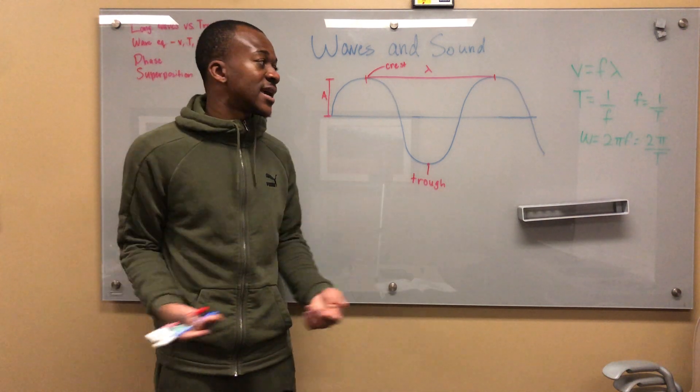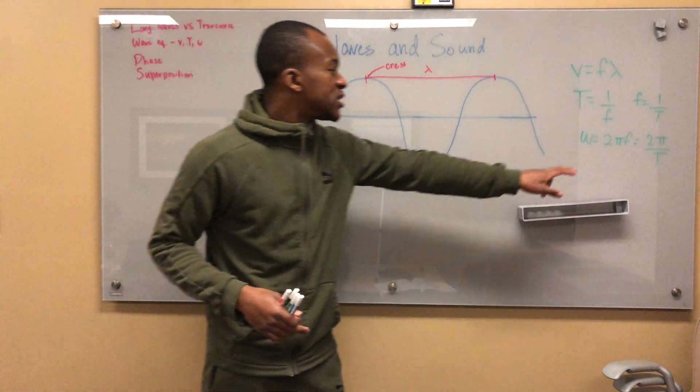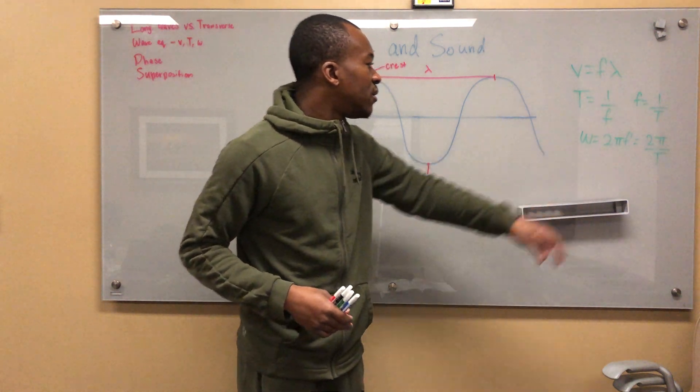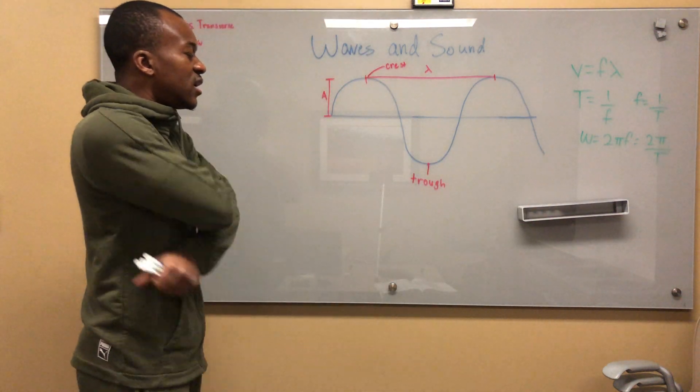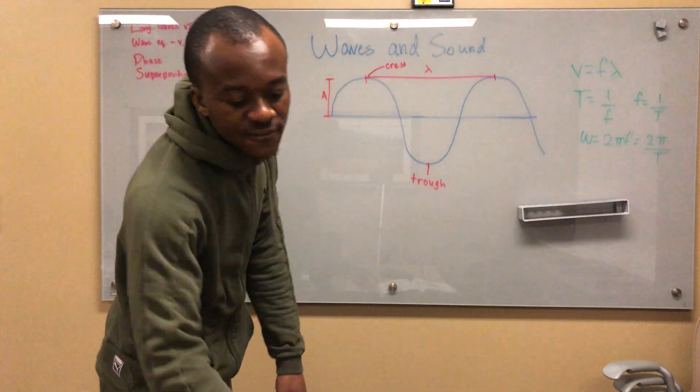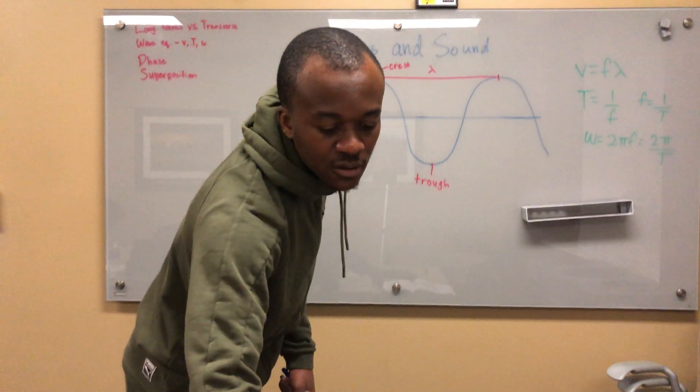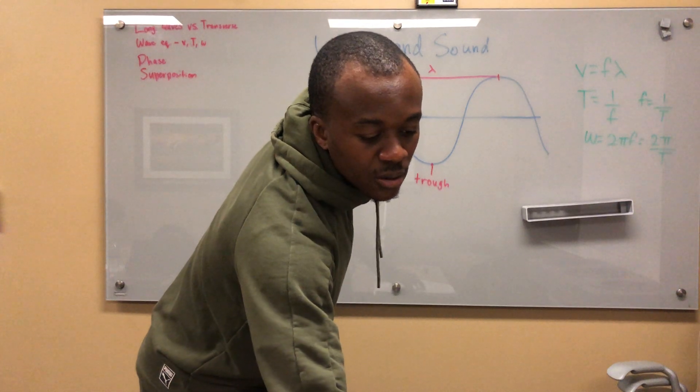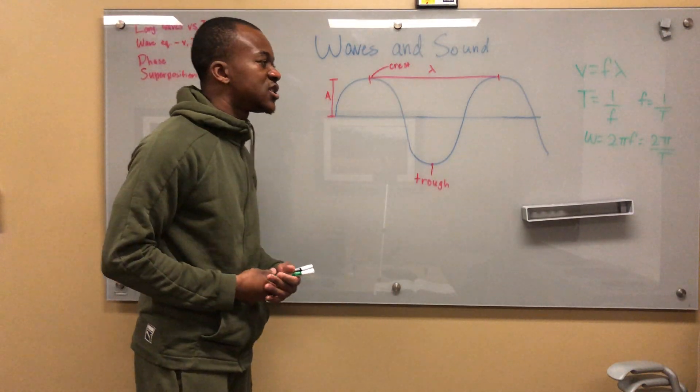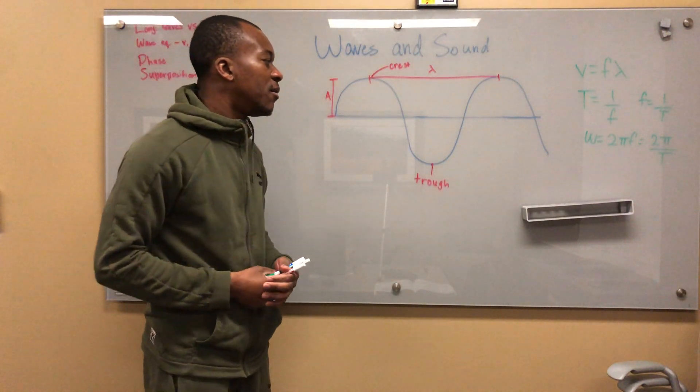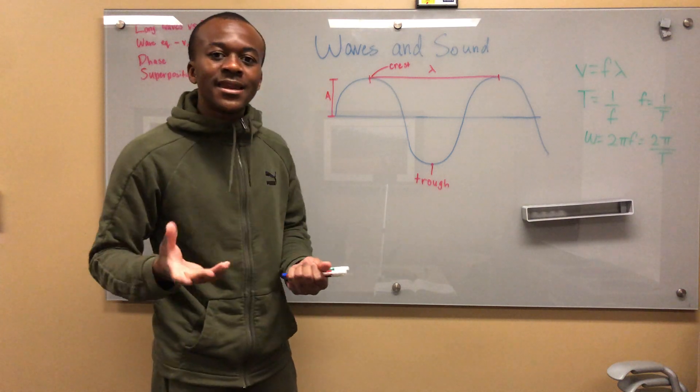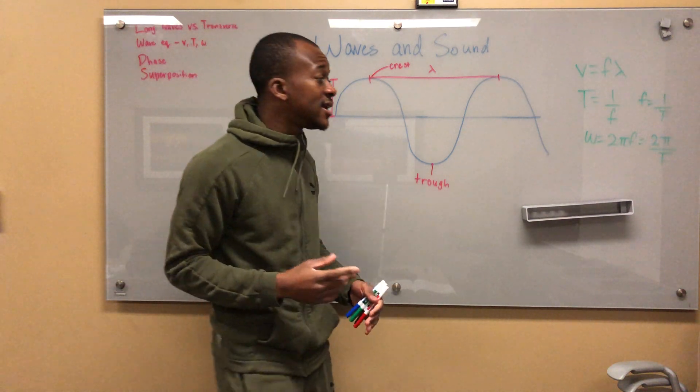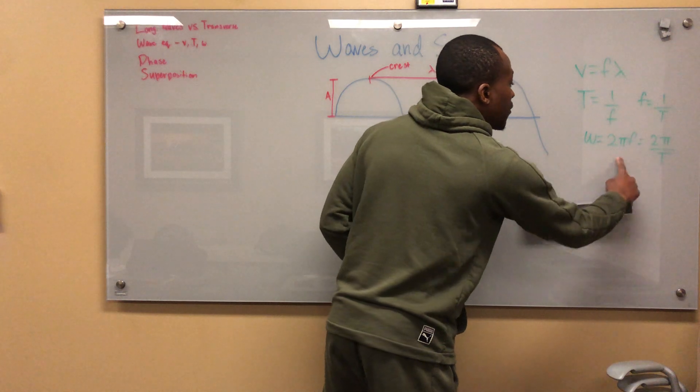T is generally given in seconds, so frequency of course would be one over seconds. Omega is the angular frequency - it's another type of frequency. When we're dealing with that, we have to include pi.